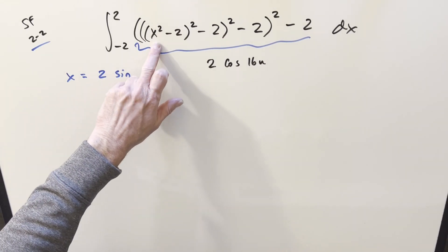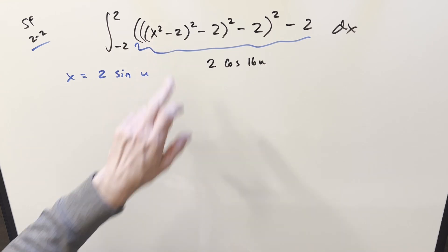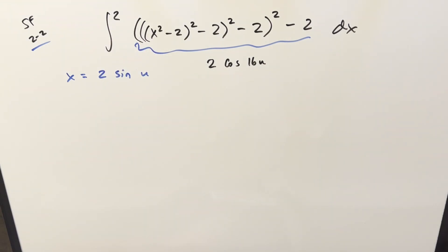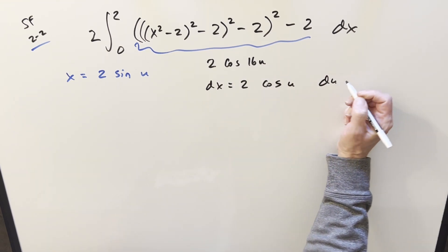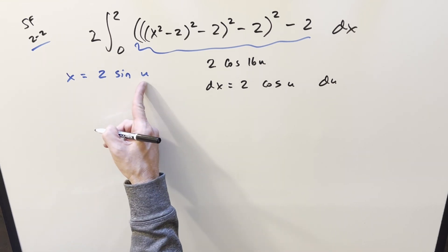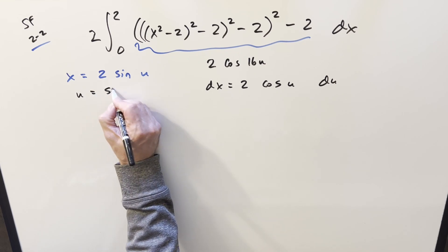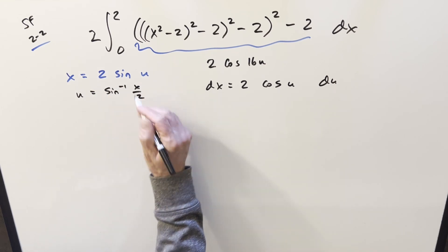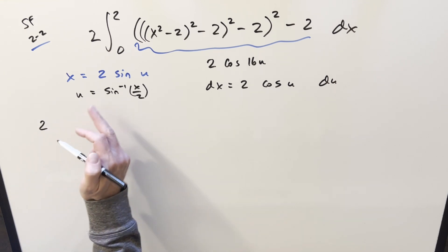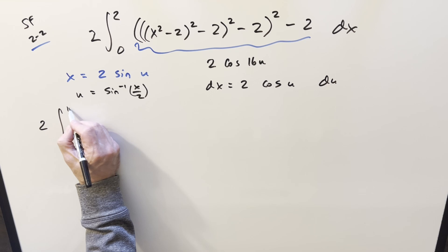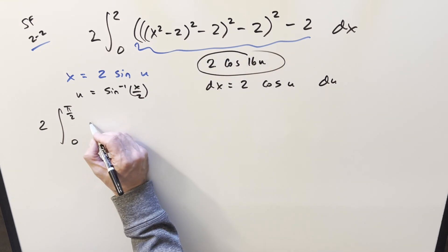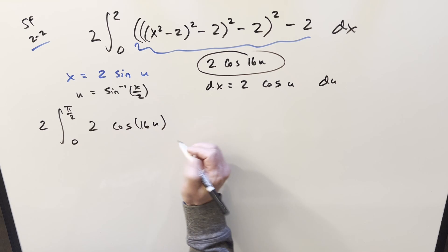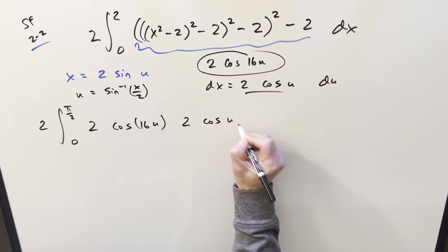One other thing before substituting: notice we only have x in one place and it's squared, so this is an even function. For an even function with symmetric bounds around zero, I can change the lower bound to zero and bring a two out front. Then I need my dx value — taking the derivative, dx equals two cosine u du. To get our bounds, u equals arcsin(x/2), so plugging in two gives arcsin(1) which is pi over 2, and plugging in zero gives arcsin(0) which is zero. So we bring the two out front, and the integrand is two cosine 16u times two cosine u du.